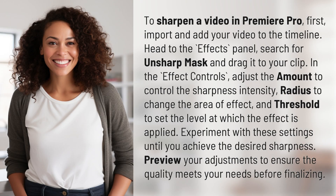To sharpen a video in Premiere Pro, first import and add your video to the timeline. Head to the Effects panel, search for Unsharp Mask and drag it to your clip.